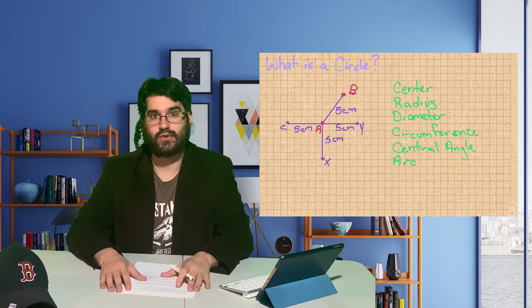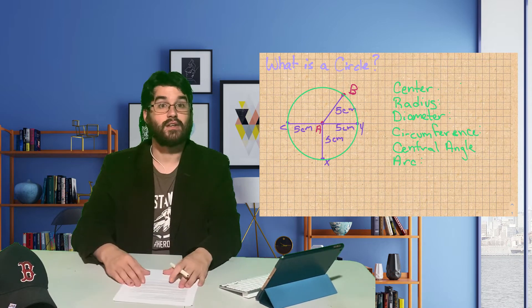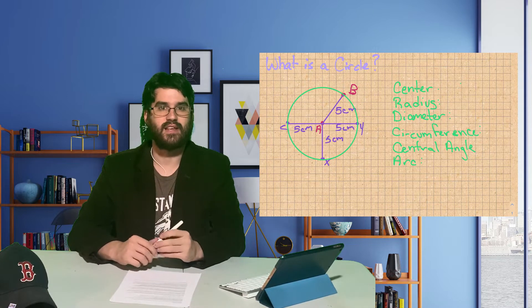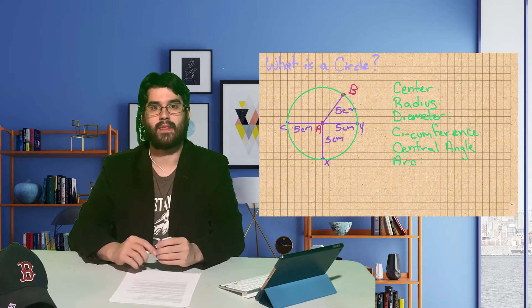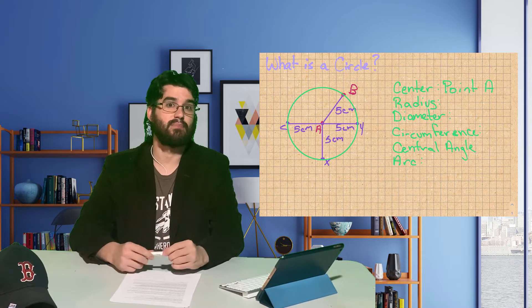This means they're all on the circle centered on point A. A circle is the set of all points that are a fixed distance away from a given point. That given point is called the center. The center of this circle is point A.